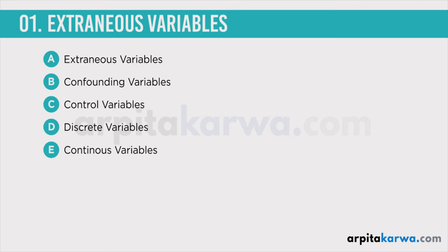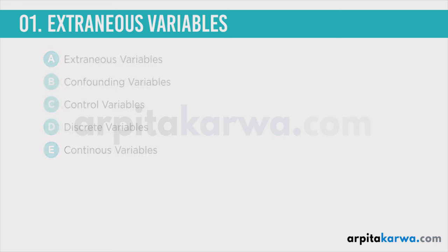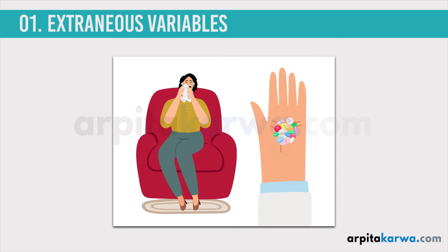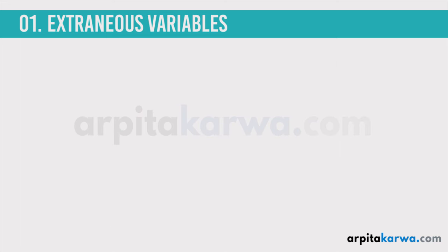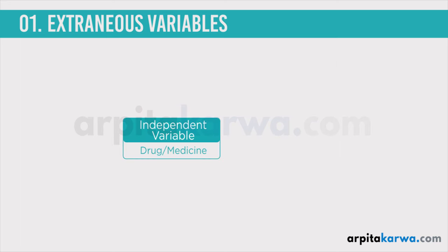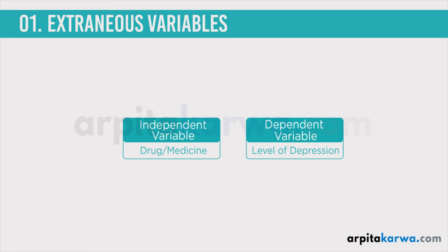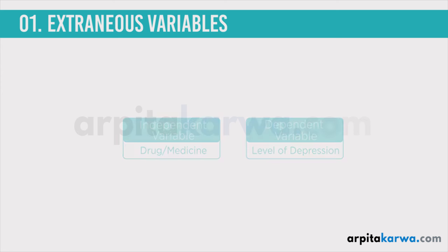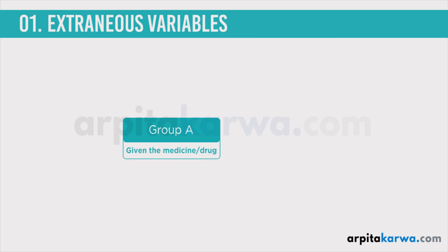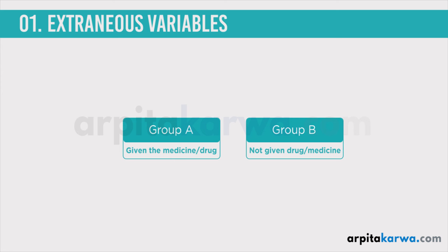Let us imagine that there is a psychologist named Aditi. She has found a new drug and she thinks that this drug will help to treat depression. To help prove that this drug works, she decides to do a research study on it. In Aditi's study, her independent variable is the drug and her dependent variable is the level of depression experienced by the subjects. In a very simple experiment, she divides the people into two groups: the first group is given the drug and the second group is not given any of that drug.